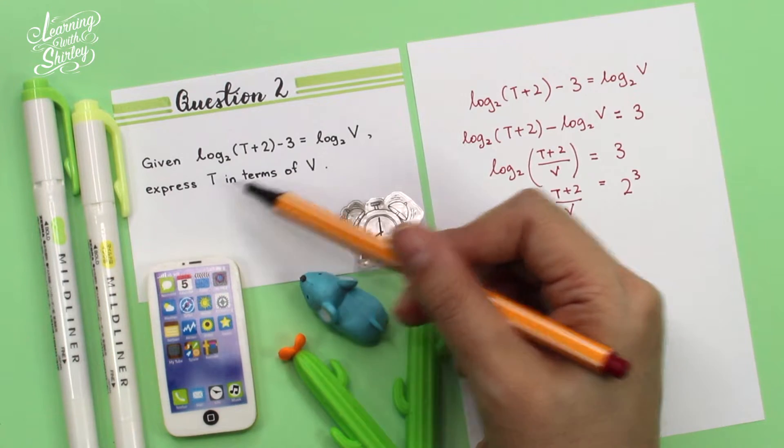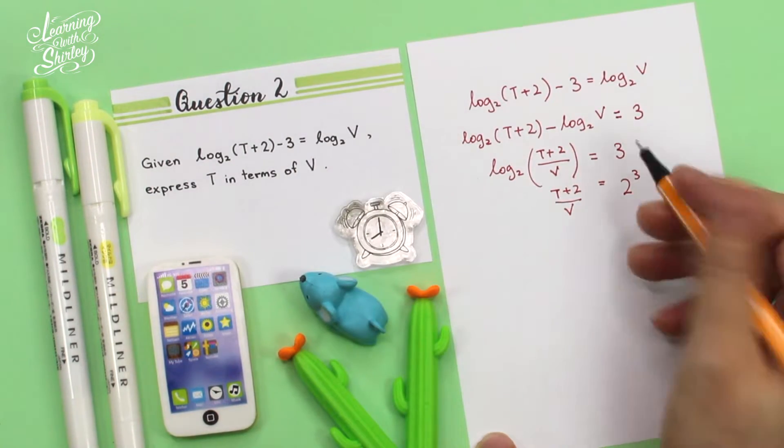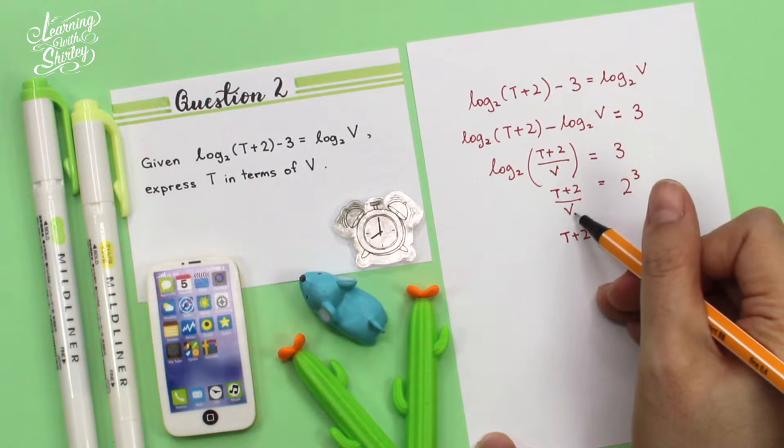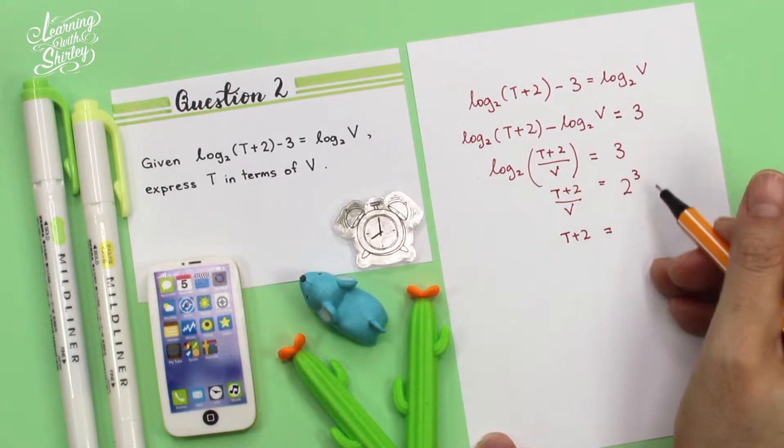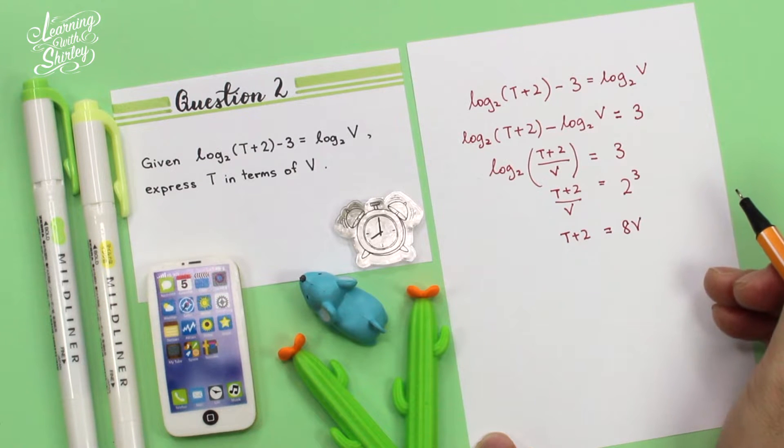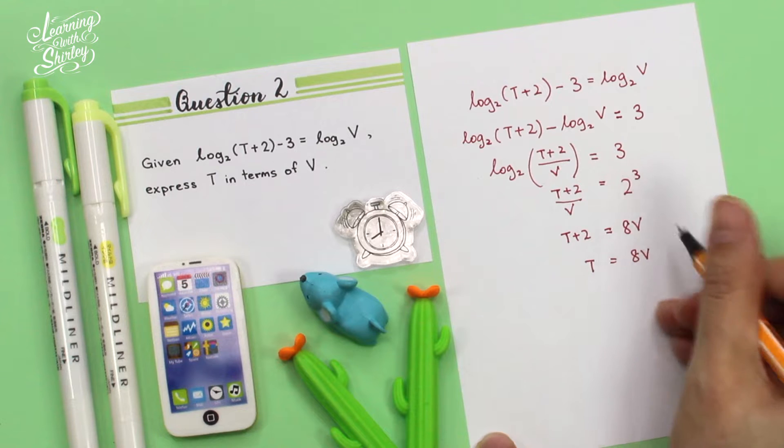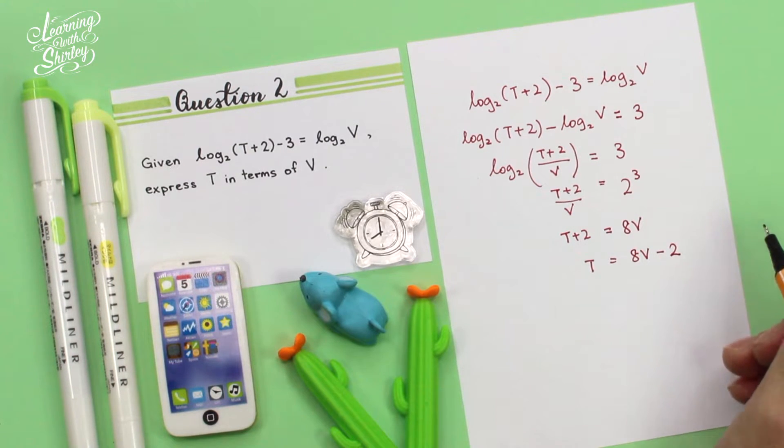Okay, and then they want us to express t in terms of v, which means that t must be on the left as a subject. So t + 2, I've got to get rid of this v, shift it over to the right-hand side. So equals, 2 cubed is equals to 8, so 8 times v becomes 8v. So t equals 8v minus 2. And that's the answer.